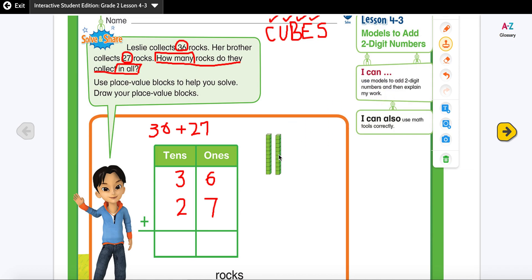One, two, three, four, five, six. And to show 27 I will need two tens and seven ones.